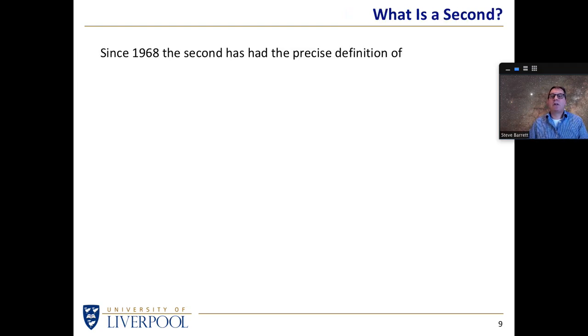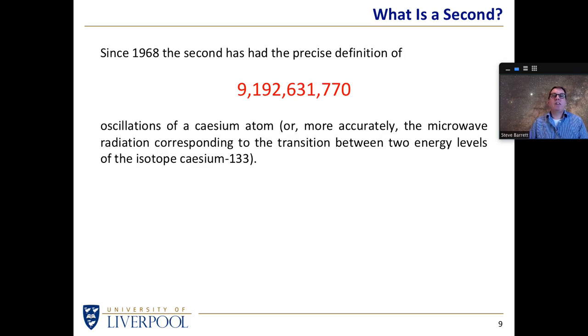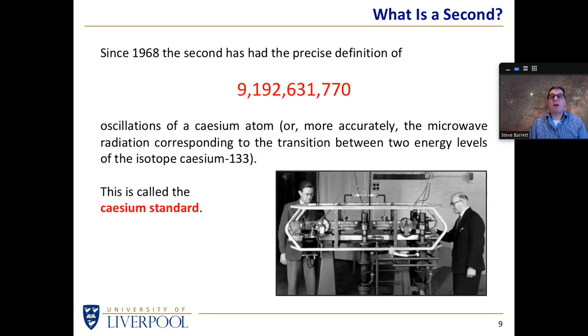So let's think about what a second actually is. Since 1968, the second has had a very precise definition. A certain number, about nine billion oscillations of a cesium atom is defined to be a second. Strictly speaking, it's the microwave radiation that corresponds to a transition between two energy levels in a particular isotope of cesium.